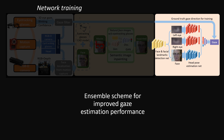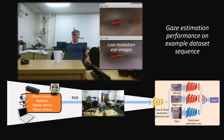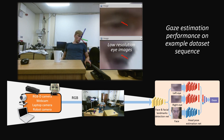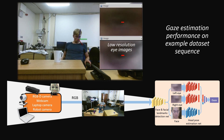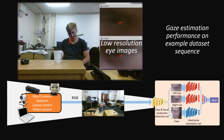To cope with the large variations of appearance within our new dataset, we design a new gaze estimation framework composed of several deep networks. This sequence shows the gaze estimation performance exemplified on one of the subjects. Although the eye images are of low resolution, the gaze is estimated accurately.